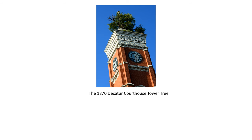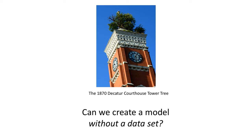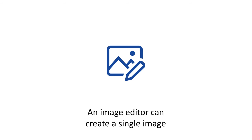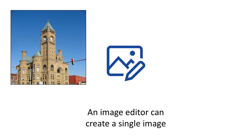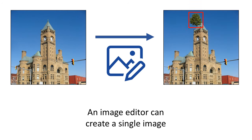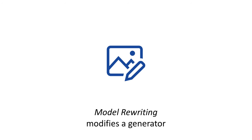Because there is no big dataset of trees on towers, how can we make a generative model without a dataset? The problem of making something totally unique comes up all the time. For example, an image editor takes an image as input and can synthesize a new image with any effect I want. I could use it to draw a tree on top of a tower, but that only changes one image. In our paper, we do something different — we show how to edit a model instead of an image.